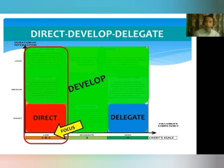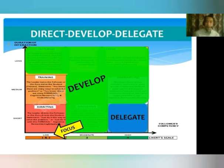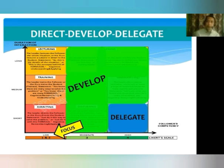Let's check out the first column — the left column of this diagram. Focus on the low competency of the followers. The first is the short duration of interaction — this is the direction. Secondly, the medium duration of interaction. And the third is the long duration of the interaction.